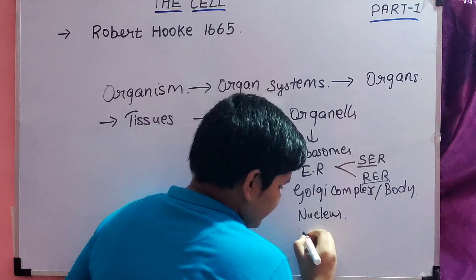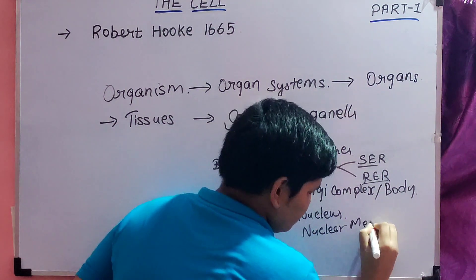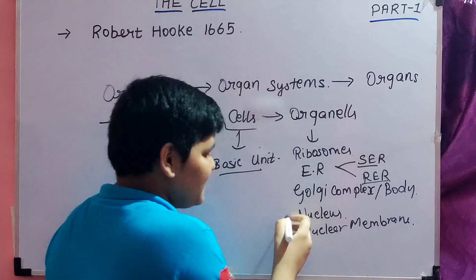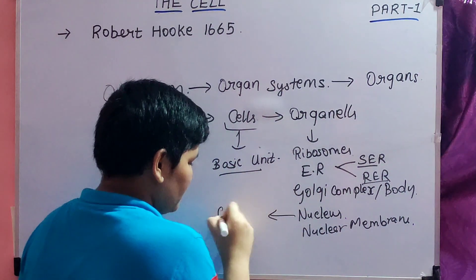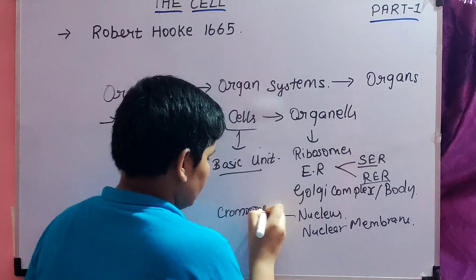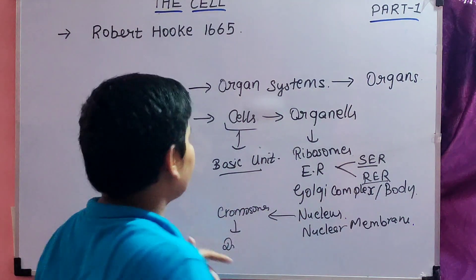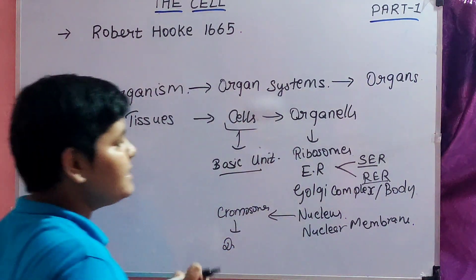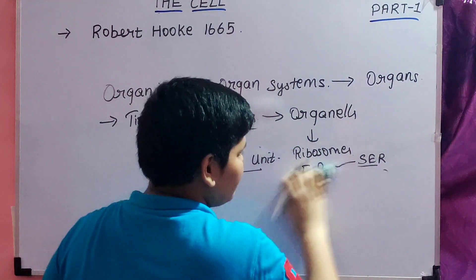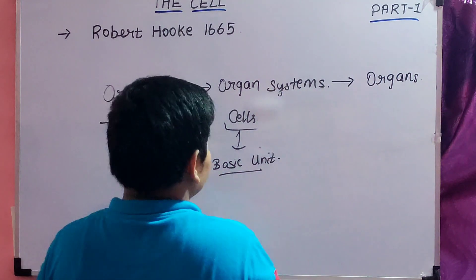The nucleus is surrounded by the nuclear membrane. Going in more detail, the nucleus is also made up of chromosomes, which are made up of DNA. If you go inside everything, you find many simpler things inside any organism. We will be discussing only up to the cell level — so according to our point of view, the cell is the basic unit of life.